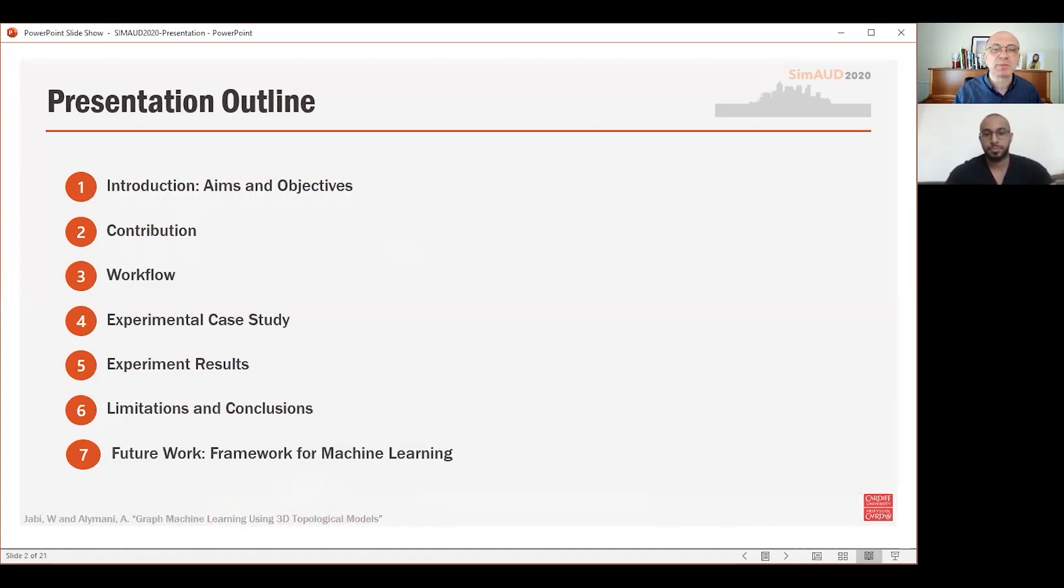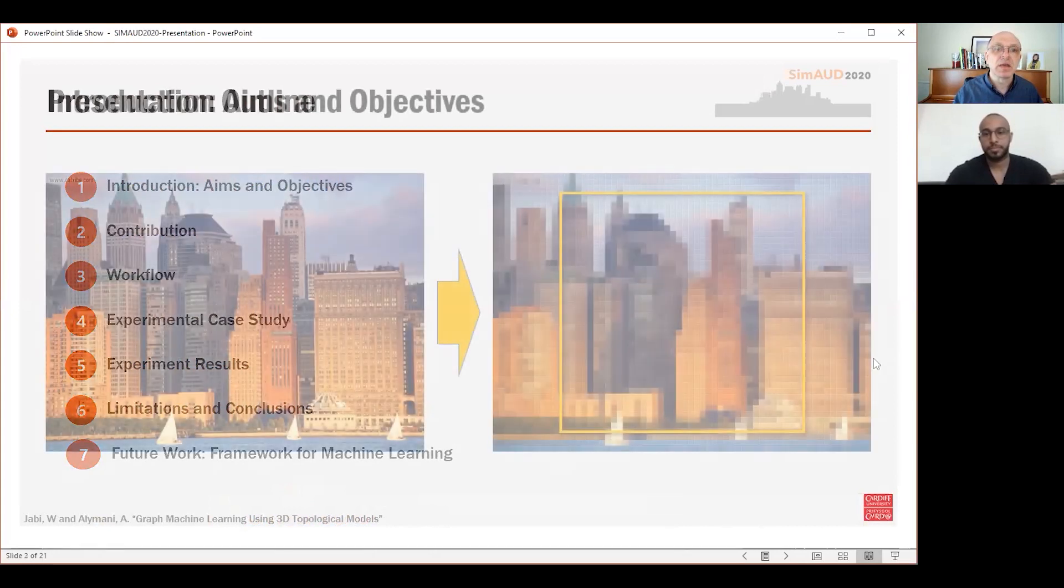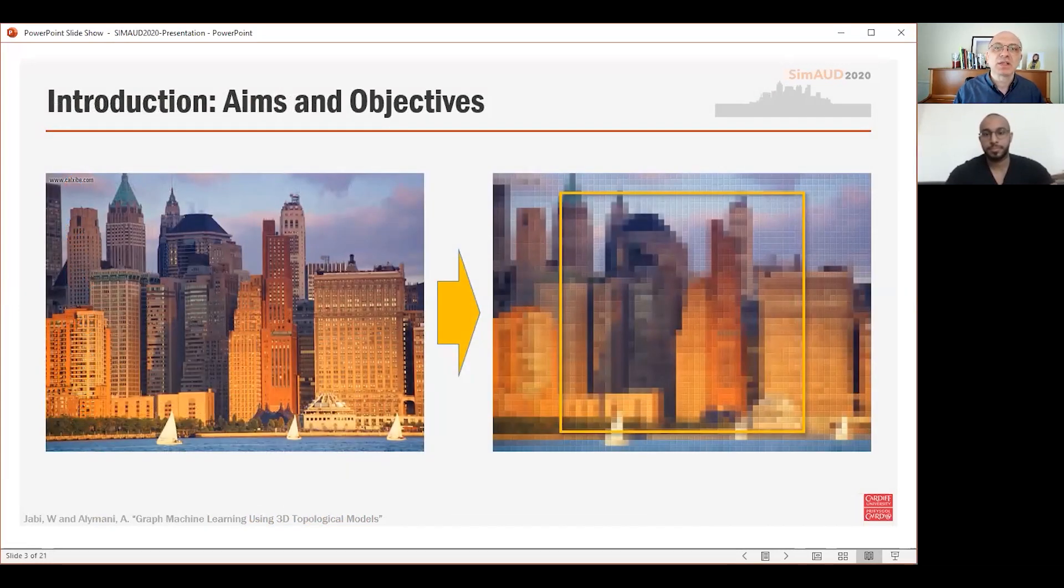We'll conclude the paper with a description of the limitations of the approach but also its promise and our plans for future work which forms part of Abdurrahman's PhD research. Our aim for this research project is to algorithmically and automatically recognize and classify architectural buildings and complexes. This would be useful to predict their performance or to generatively design new buildings that fit well within their context.